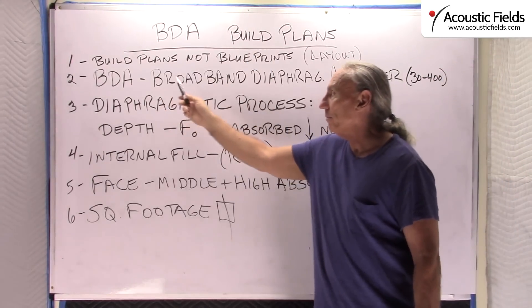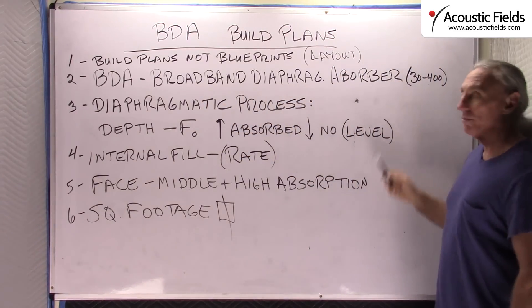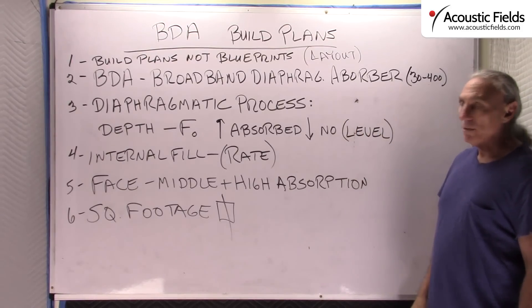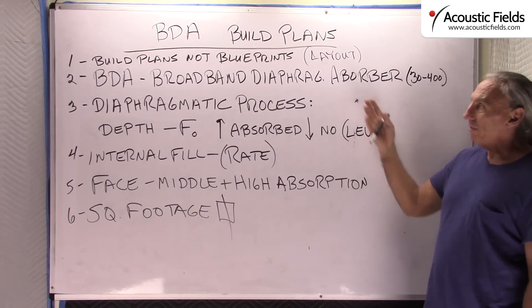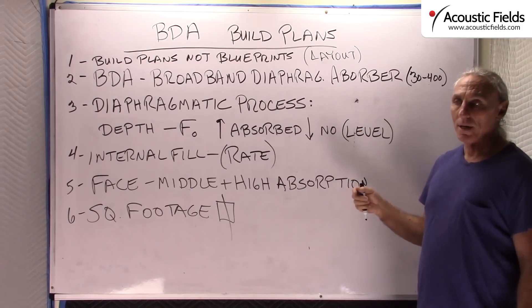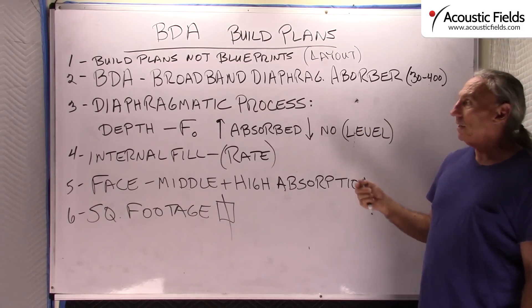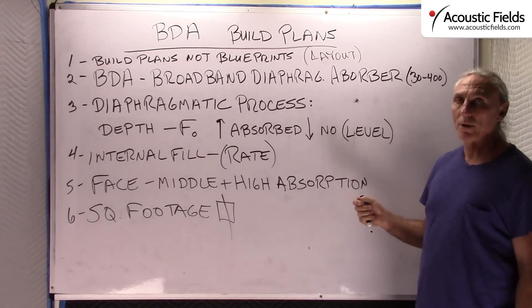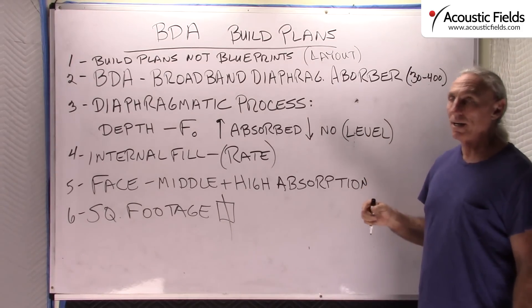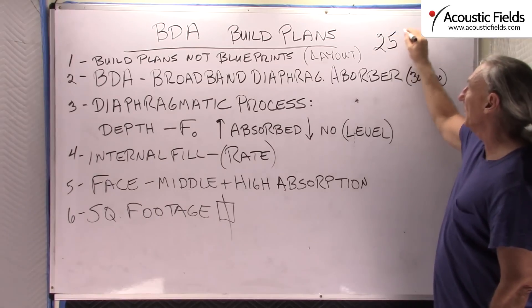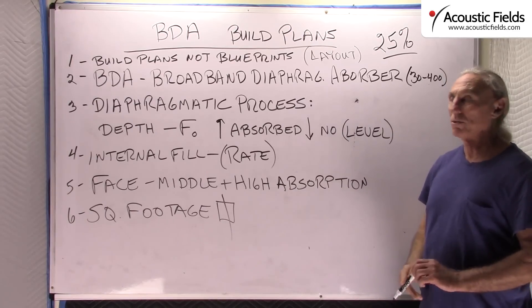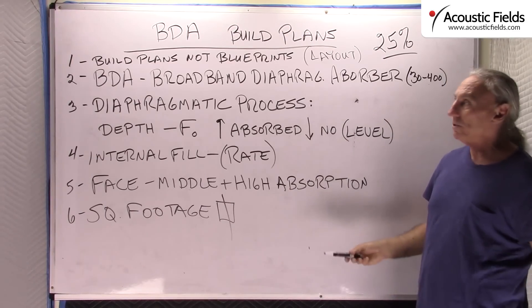What does BDA stand for? Broadband Diaphragmatic Absorber, with a 30 to 400 cycle range — that is its frequency response. The BDA drawings are actually our 8th prototype construction in a series of 12. The 11th and 12th products we offer on our website include the carbon technology, but the BDA does not have carbon inside. The carbon technology boosts the performance of the BDA by 25%. We no longer license the technology, but it is available through purchase with our production units.